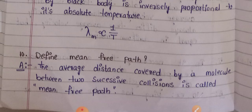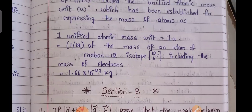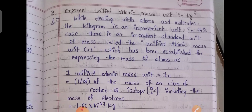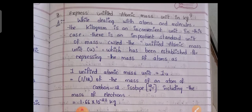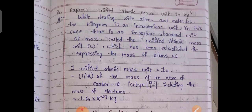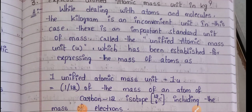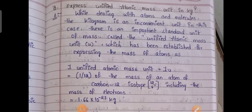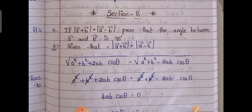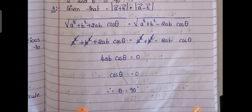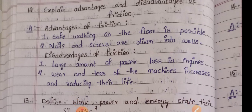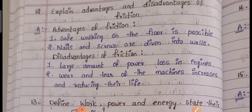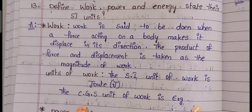I have now finished Section A — ten questions. Next, coming to the Section B questions. Section A third question: express unified atomic mass unit in kg. At least try to read the formulas or any two lines related to the question. Section B: explain the advantages and disadvantages of friction — that is the twelfth question answer. Define work, power, and energy and state their SI units — that is the thirteenth question.